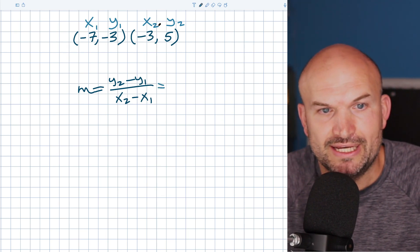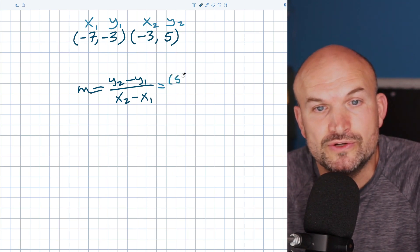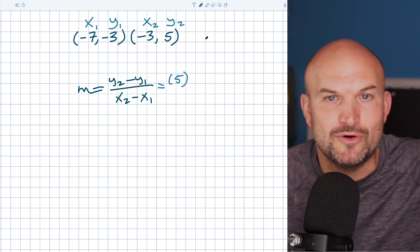So what I like to do in this example is say, all right, my Y2, that's going to be five. Even for positive numbers, I'm just going to use parentheses. It's something I'm going to be consistent on.